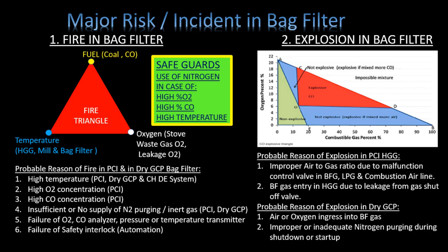Safety measures in PCI bag filter include inlet temperature control and nitrogen purging in case of high temperature, high oxygen percentage, or high carbon monoxide gas concentration. In dry GCP, due to very high furnace top temperature the bag filter bags could be burned. Safety measures include furnace top temperature control by opening the top water spray and nitrogen purging in dry GCP inlet and individual silos.